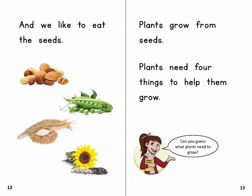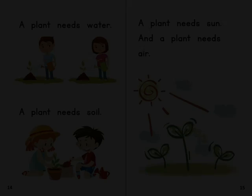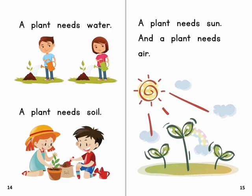Plants grow from seeds. Plants need four things to help them grow. Can you guess what plants need to grow? A plant needs water. A plant needs soil. A plant needs sun. And a plant needs air.